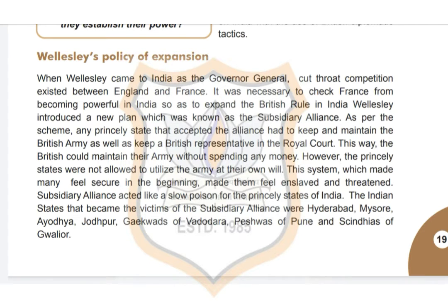The answer is Subsidiary Alliance. As per the scheme, any princely state that accepted the alliance had to keep and maintain the British army, as well as keep a British representative in the royal court. This way the British could maintain their army without spending any money. However, the princely states were not allowed to utilize the army at their own will. This system, which made many feel secure in the beginning, eventually made them feel enslaved and threatened. The Subsidiary Alliance acted like a slow poison for the princely states of India.